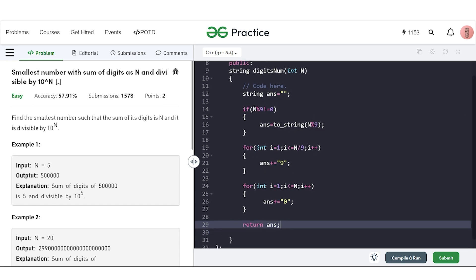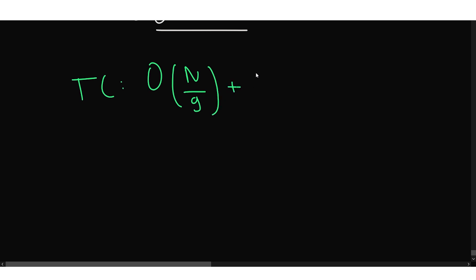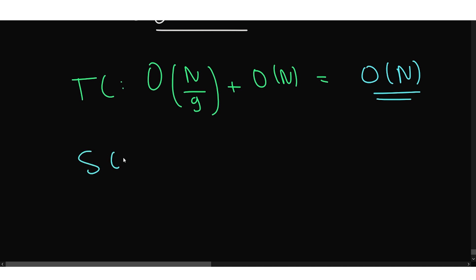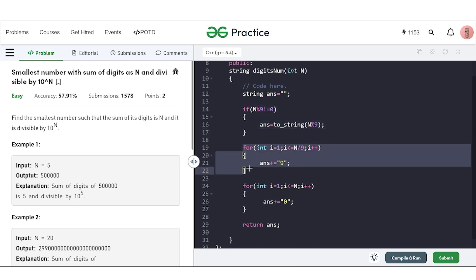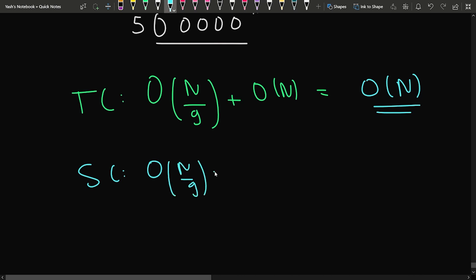Talking about the time complexity: the if-condition is constant time. The first loop runs n/9 times for adding nines, and the second loop runs N times for adding zeros. So the overall time complexity is O(N). For space complexity: storing the remainder is constant, storing n/9 nines is O(n/9), and storing N zeros is O(N). Overall space complexity is also O(N).